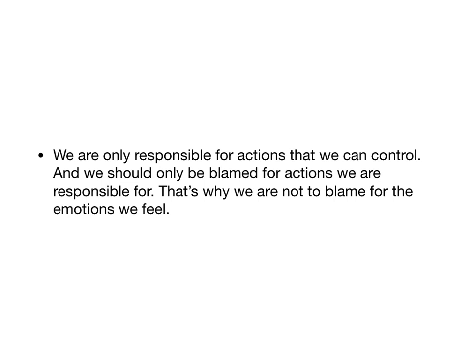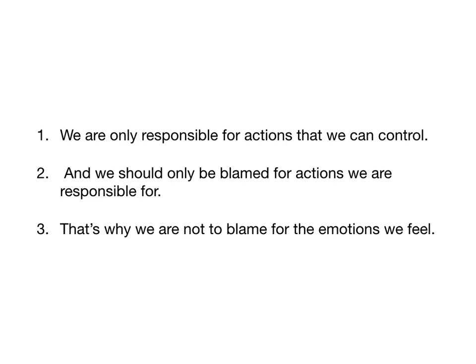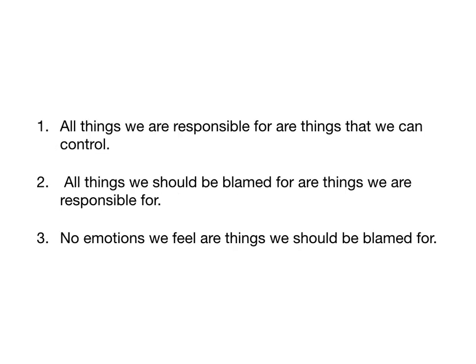Here's another example: "We are only responsible for actions that we can control, and we should only be blamed for actions we are responsible for. That's why we are not to blame for the emotions we feel." Let's put it in 1, 2, 3 form and translate it into all/some/none language. All things we are responsible for are things we can control. All things we should be blamed for are things we are responsible for. No emotions we feel are things we should be blamed for.